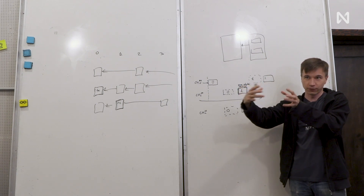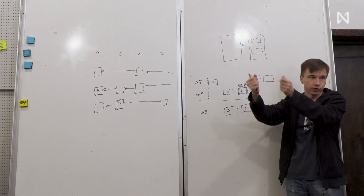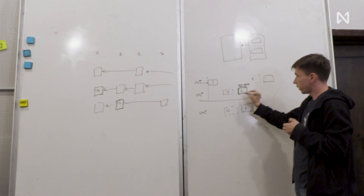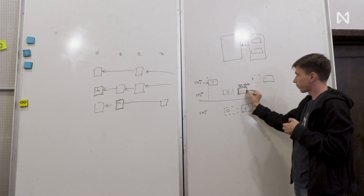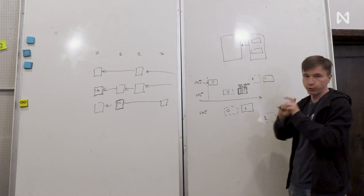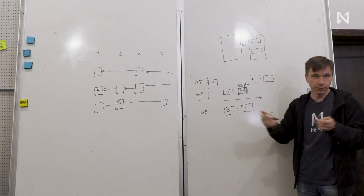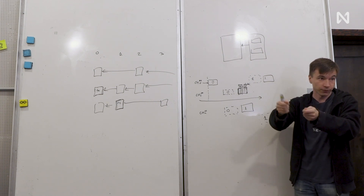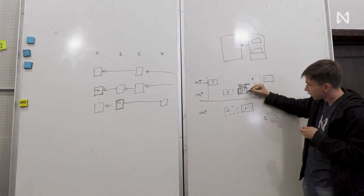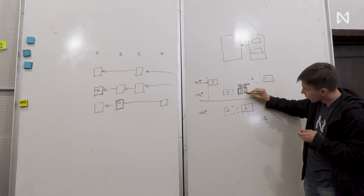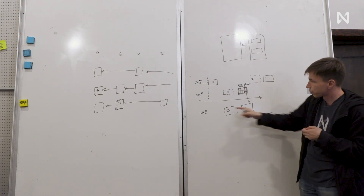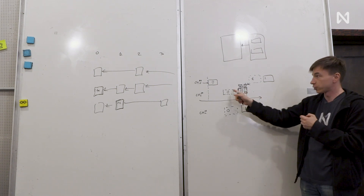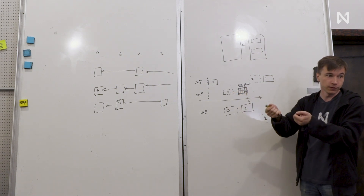Those receipts are sorted by destination shard ID, so you can prove any subset of those receipts going to a single shard with a single Merkle proof. When the chunk is cut into small pieces and distributed to every validator for data availability, those pieces also include all the receipts relevant to the particular chunk producer for their shard.